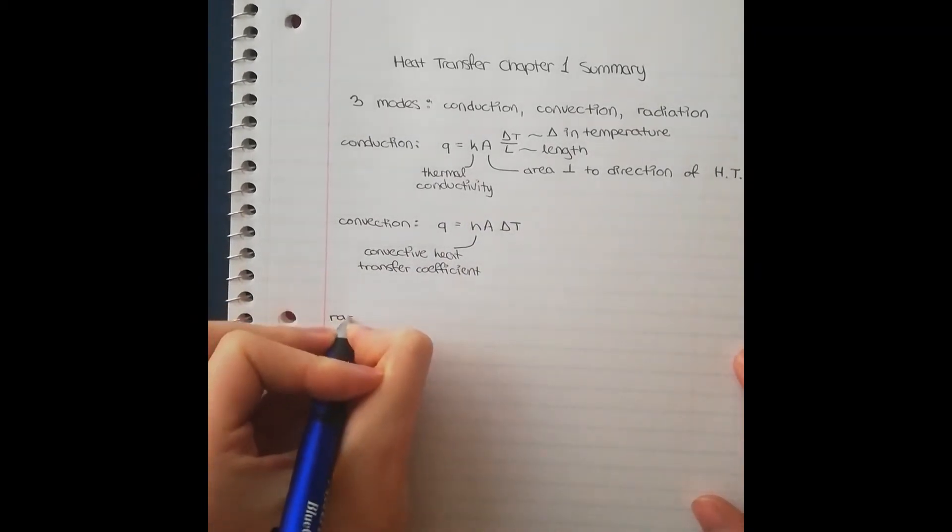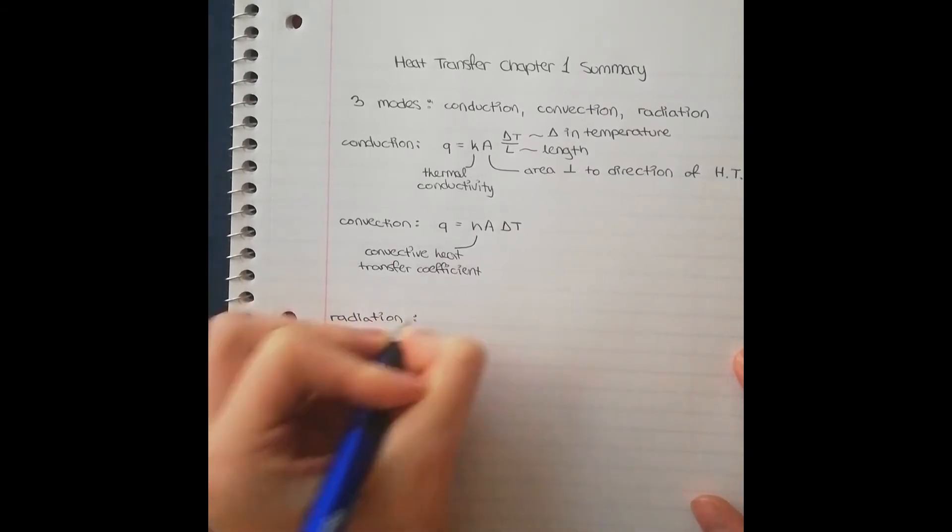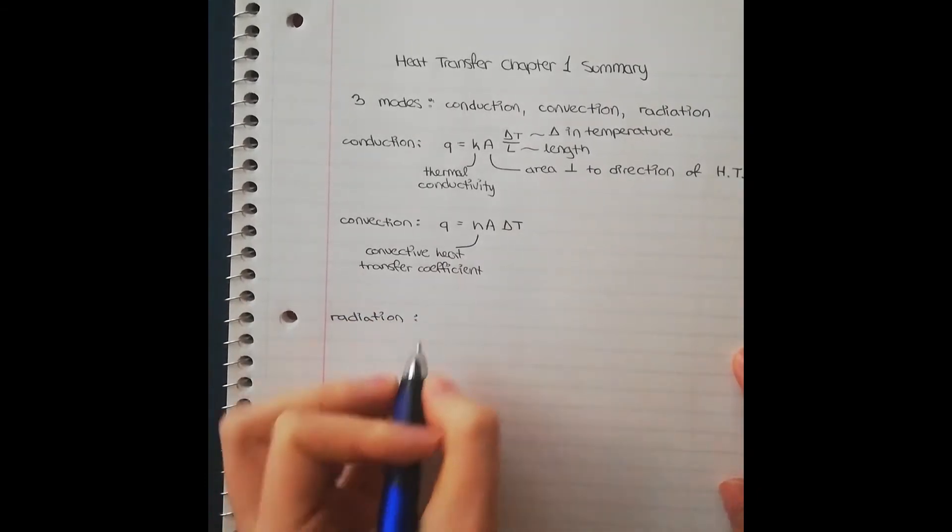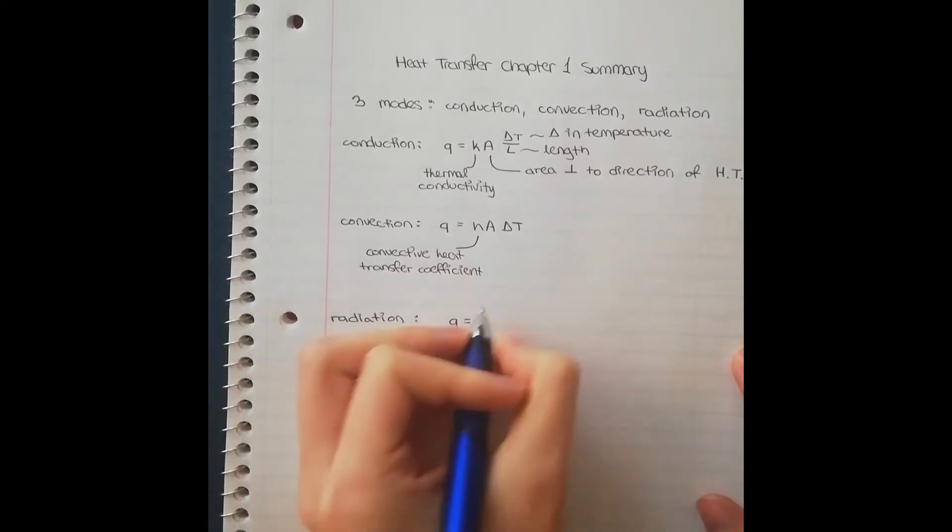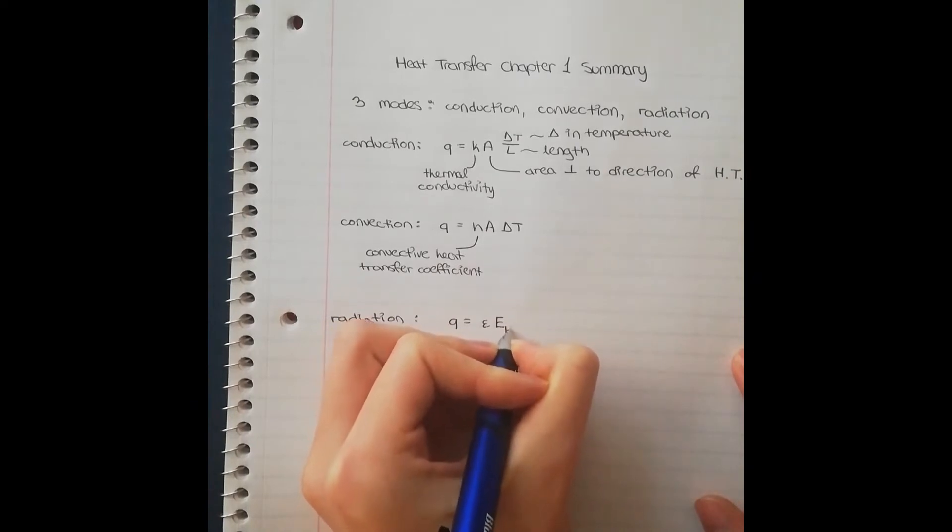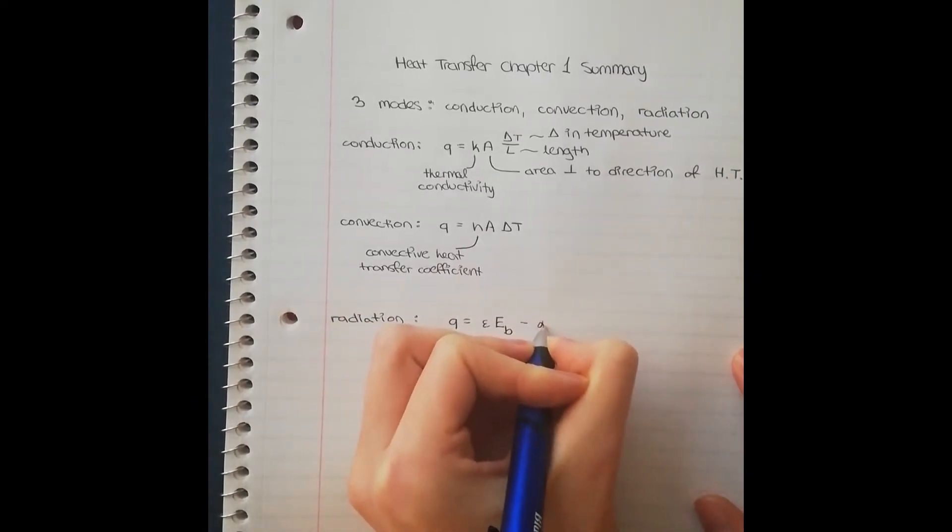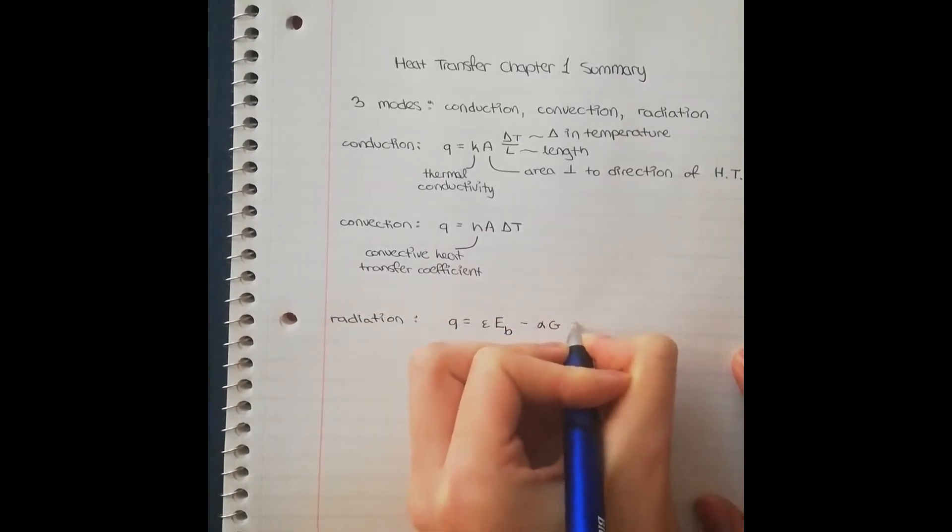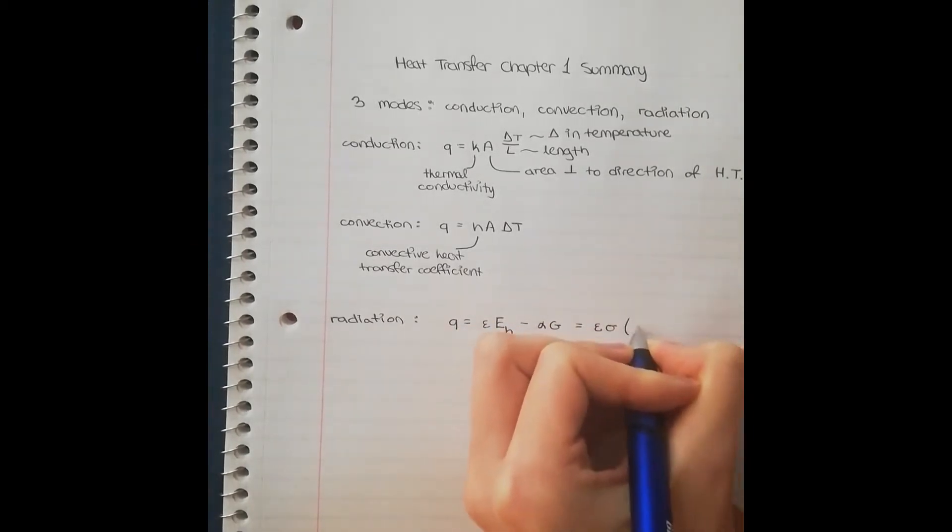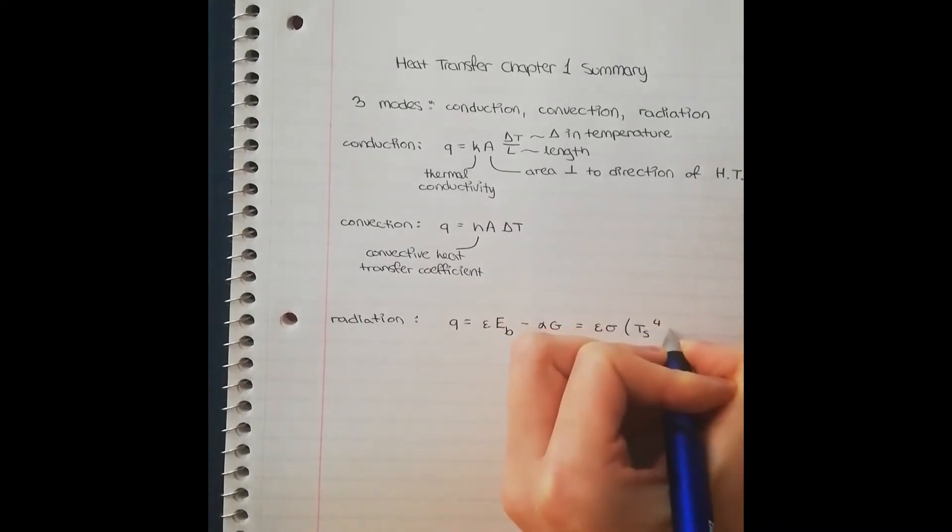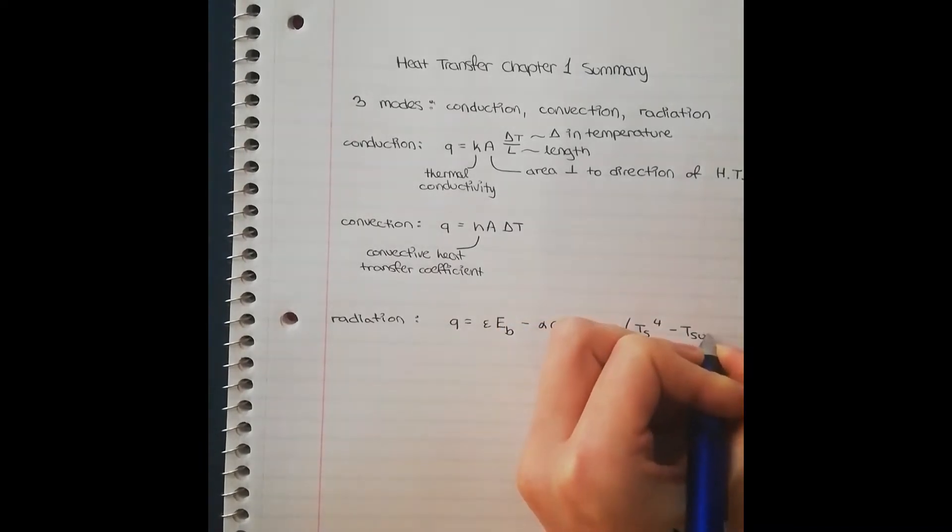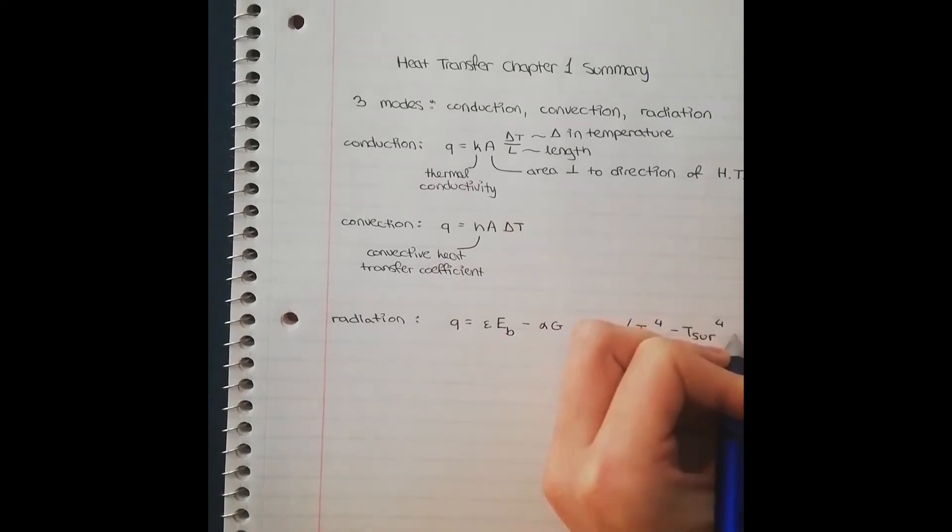And next, we do radiation. So for radiation, the guiding equation looks a little bit more complicated, but it's not. Epsilon E subscript B minus alpha G, which is also equal to Epsilon sigma T S to the 4th minus T surroundings to the 4th.